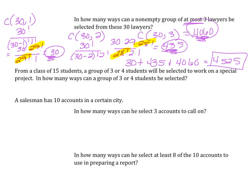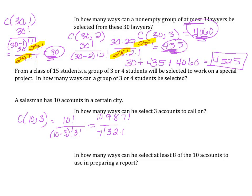A salesman has 10 accounts in a certain city. How many ways can he select 3 of these to call on? I have 10 accounts and want to choose 3: 10 factorial over 10 minus 3 factorial times 3 factorial. 10 minus 3 is 7 factorial, and stopping at 7 factorial to cancel, we're left with 10 times 9 times 8 divided by 6, which equals 120. There are 120 different ways he could choose 3 accounts to call on.